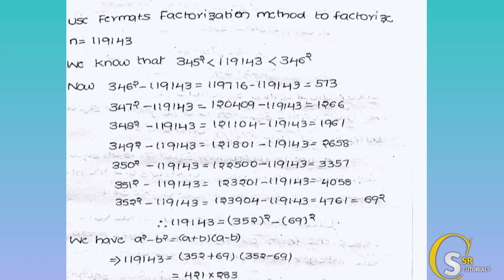We compute 346 squared minus n: 346 squared is 119716, minus 119143 equals 573. We check if 573 is a perfect square — taking its root gives a decimal, not a perfect integer, so 573 is not a perfect square.